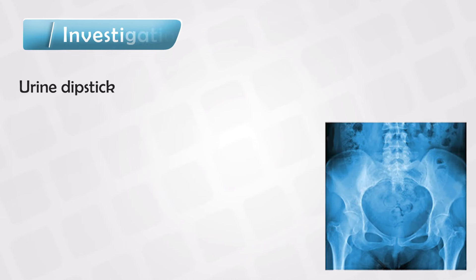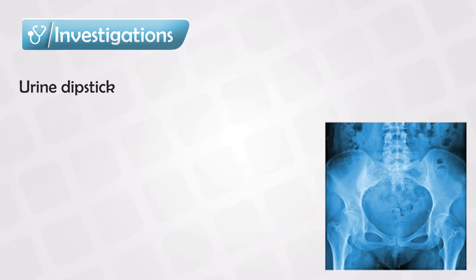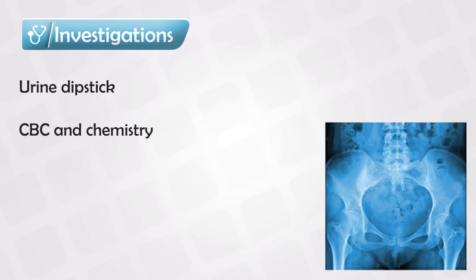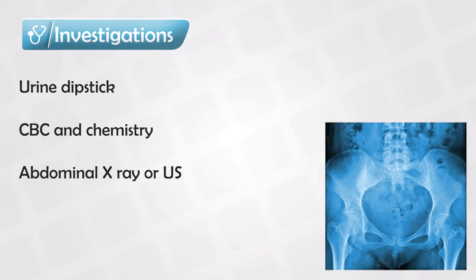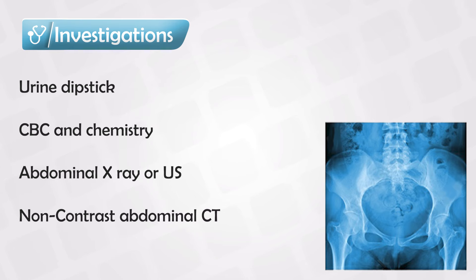The investigations you need to order include a urine dipstick, blood CBC and chemistry, an abdominal plain X-ray, and abdominal ultrasound. If you are still unsure and need further investigations, you can order a non-contrasted CT-KUB.